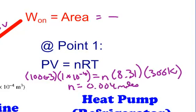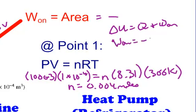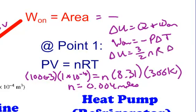With the number of moles known, you can use all three equations — delta U equals Q plus W; W equals negative P delta V; and delta U equals three-halves NR delta T — to quantify anything in the system.